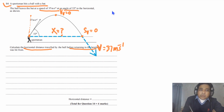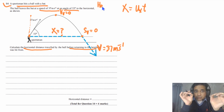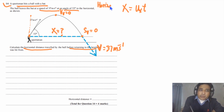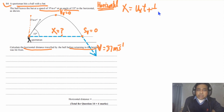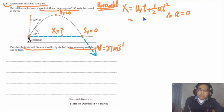Now we simply need to use kinematic equations to find the answer. We need to calculate x, which equals uₓ × t. For horizontal motion — the beauty of projectile motion is that you can treat horizontal and vertical motion separately — we write x = uₓt + ½at². Along the horizontal, acceleration is zero, so that term drops out and we are left with x = uₓ × t.